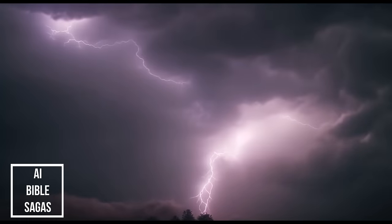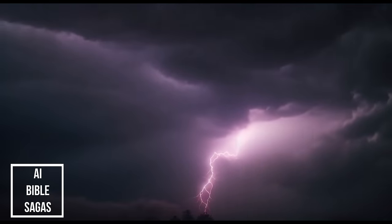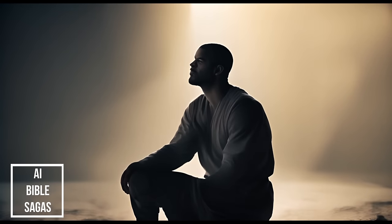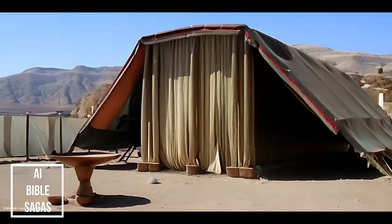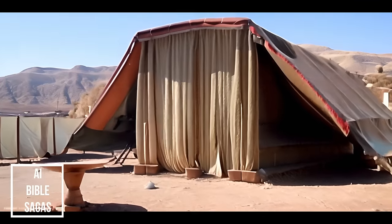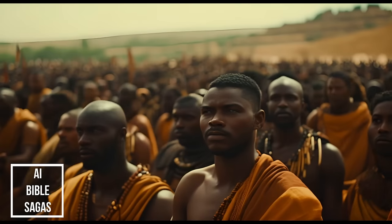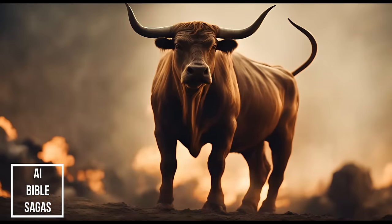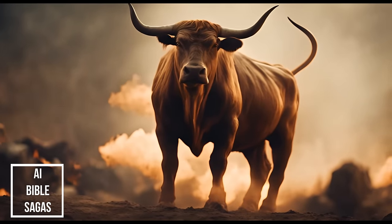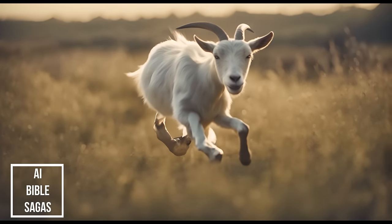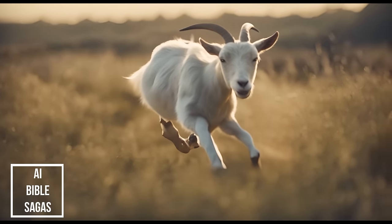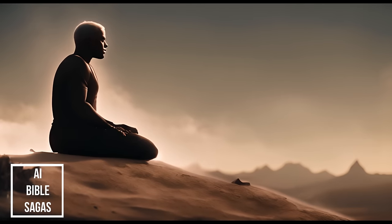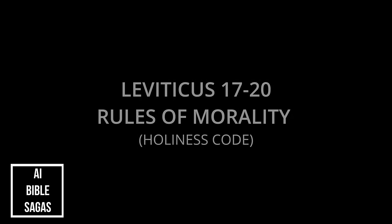The Day of Atonement, Yom Kippur, is the focal point of Chapter 16. It is the most solemn and significant ritual in Leviticus, where the High Priest enters the Holy of Holies to make atonement for himself, his household, and the entire community of Israel. The ritual involves the sacrifice of a bull and a goat, and the sending away of a scapegoat bearing the sins of the people into the wilderness. This annual ceremony is crucial for the purification and reconciliation of the Israelites with God.